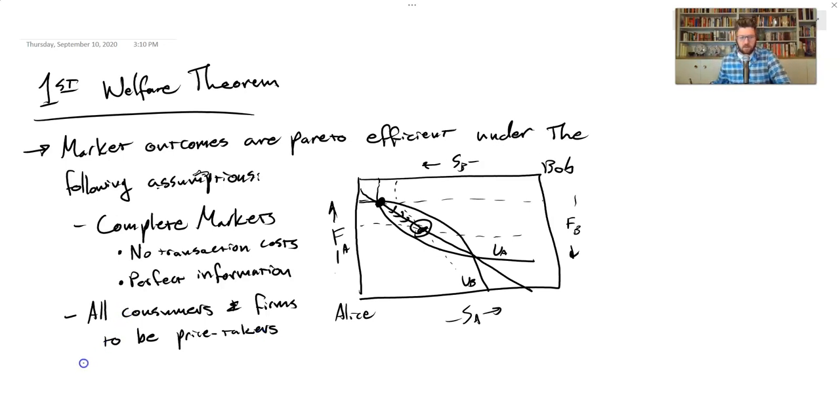Third, we need something called, I've run out of space to write, we need preferences to have local non-satiation. And this is a technical one that I won't spend as much time on, but essentially, we need our consumers to be pursuing, they want to, they have to want to trade. They can't get stuck having everything they want and not really wanting to go to the market anymore and trade with other people who might be better off if those people could trade.